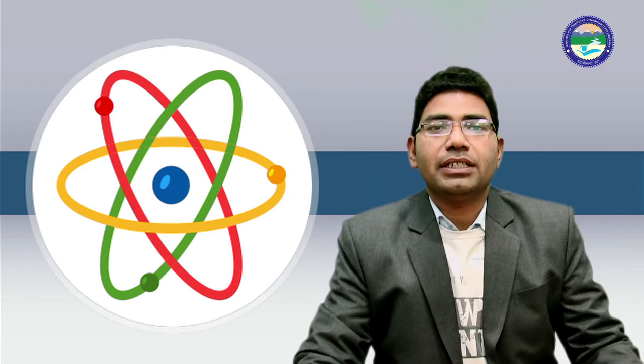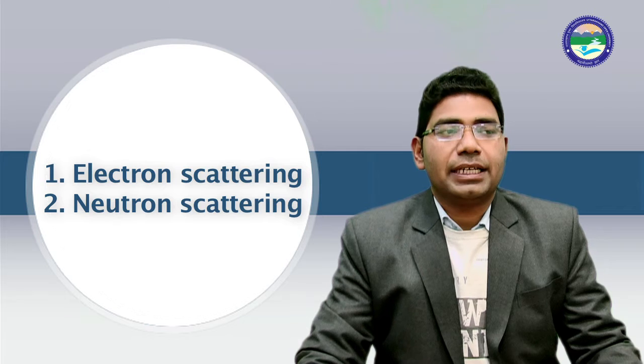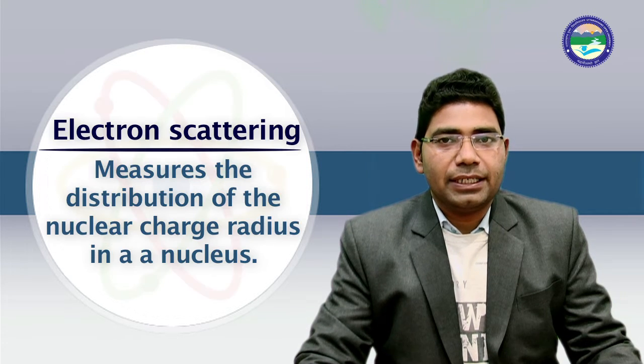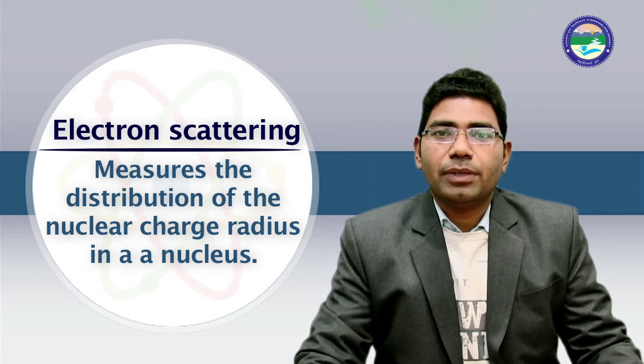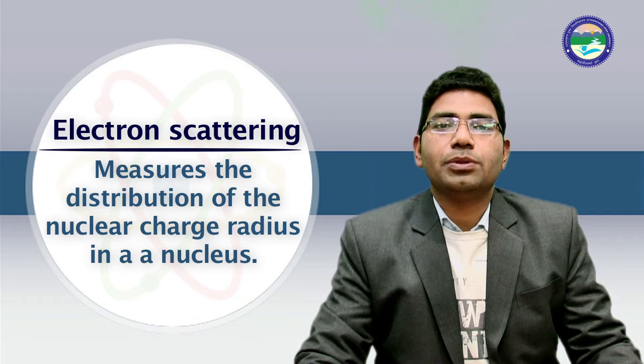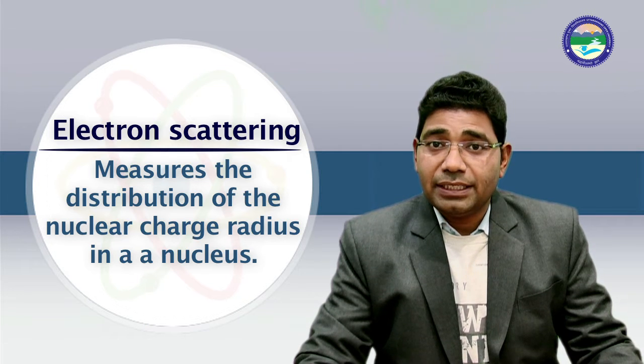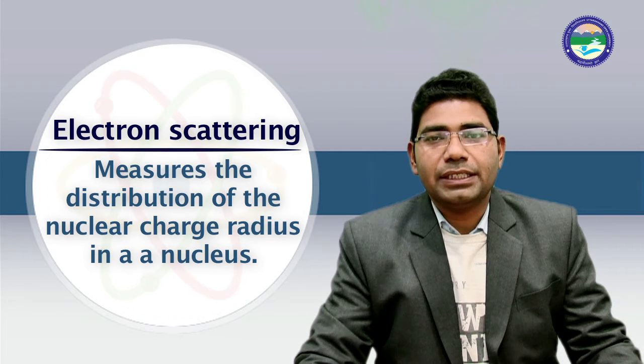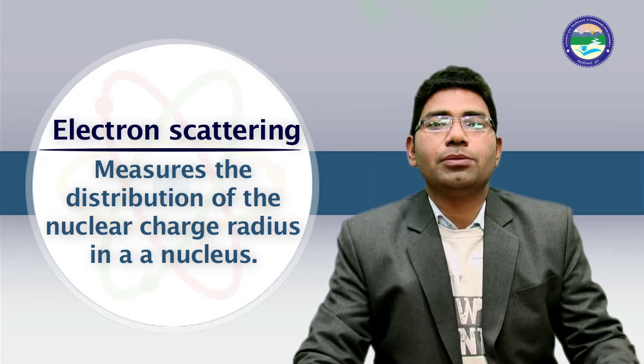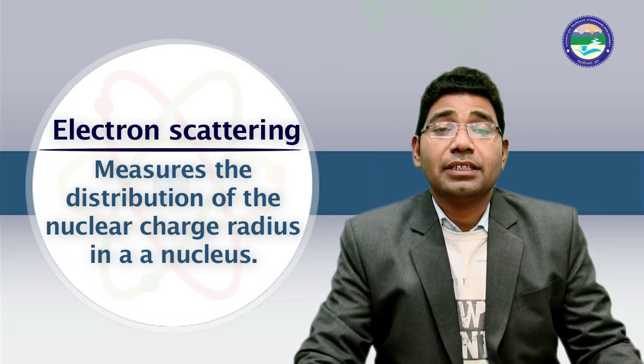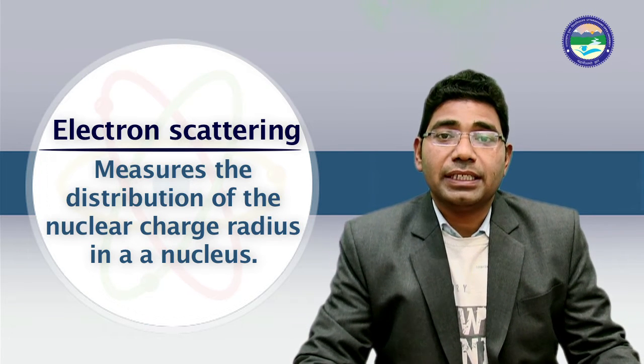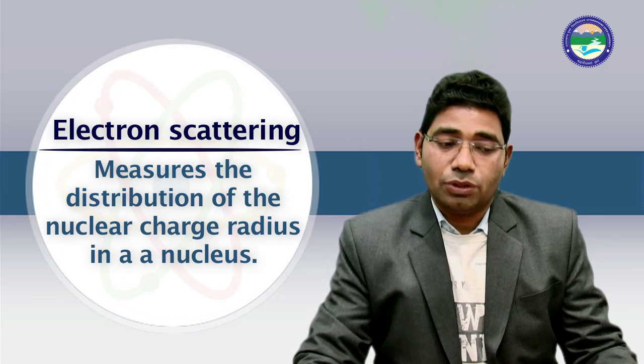For the determination we have two types of scattering. First is electron scattering. This measures the distribution of the nuclear charge radius in a nucleus.